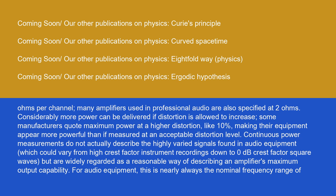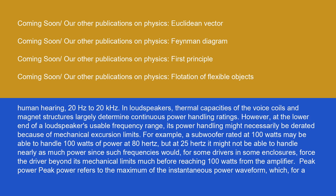Continuous power measurements do not actually describe the highly varied signals found in audio equipment, which could vary from high crest factor instrument recordings down to 0 dB crest factor square waves, but are widely regarded as a reasonable way of describing an amplifier's maximum output capability. For audio equipment, this is nearly always the nominal frequency range of human hearing: 20 hertz to 20 kilohertz.